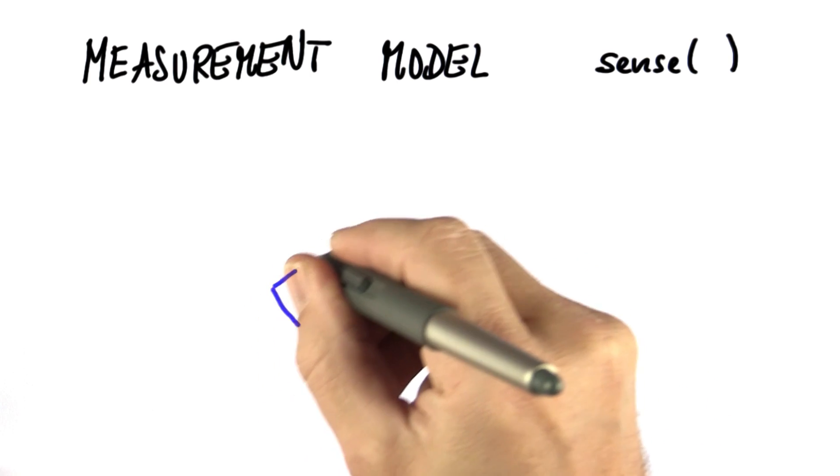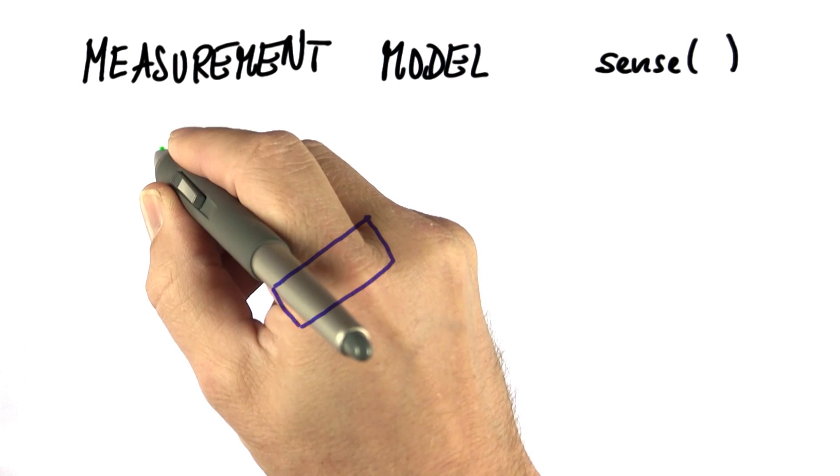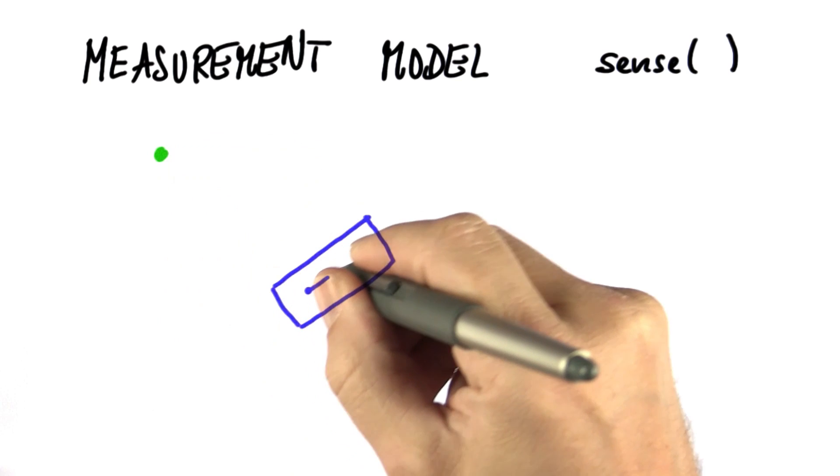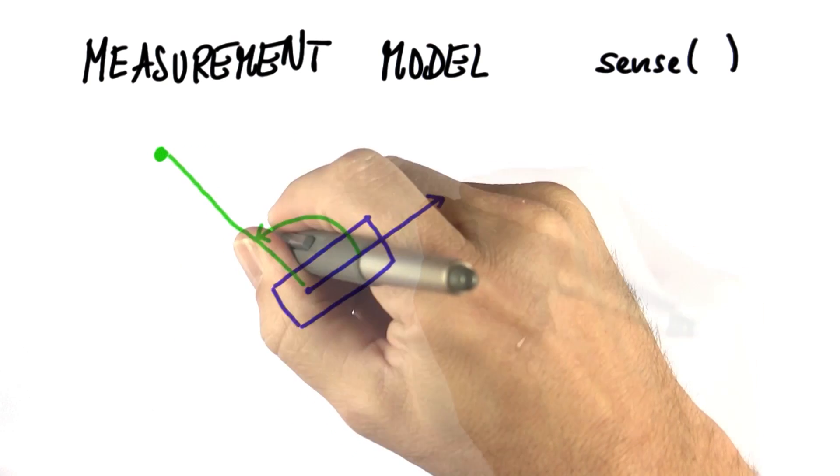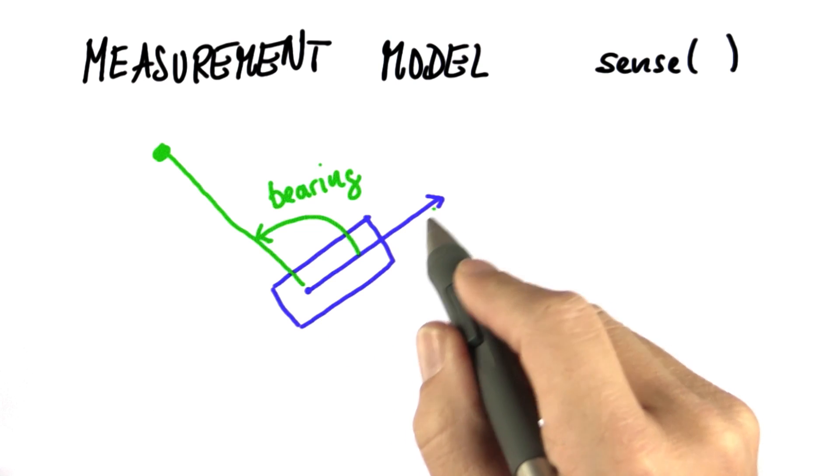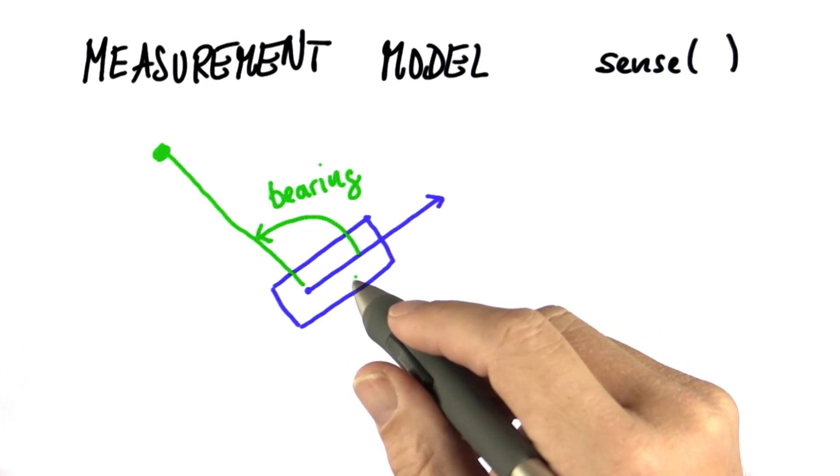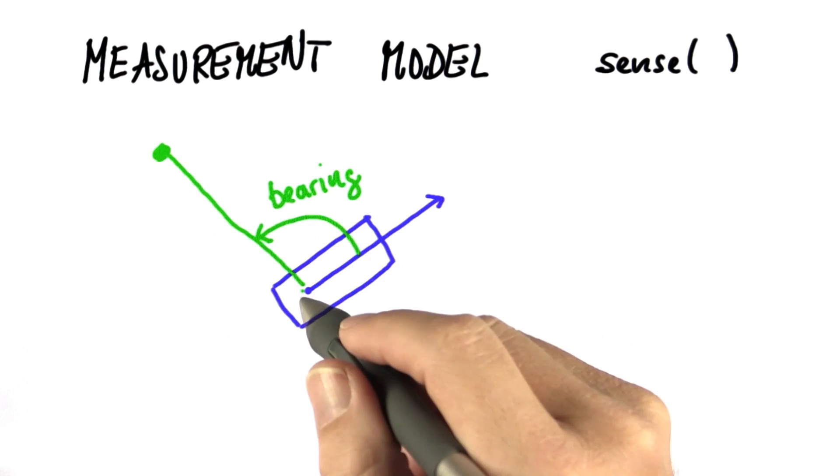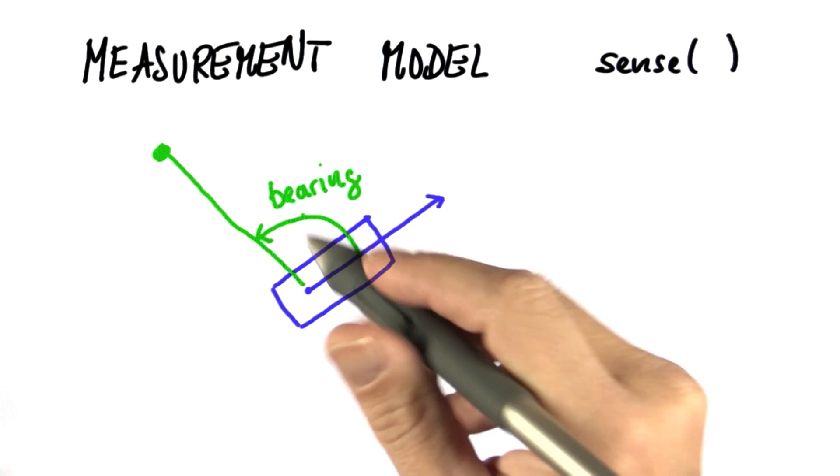Say we have a robot and we have a landmark, then the robot can measure the bearing or angle to this landmark relative to its own local coordinate system. So whereas before we measured ranges or distances, now we measure bearings or angles.